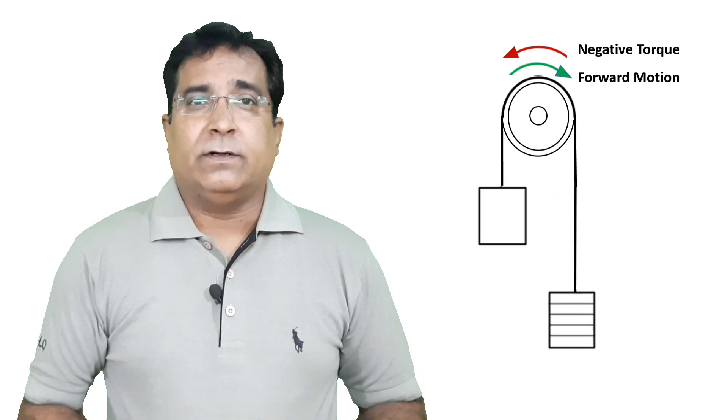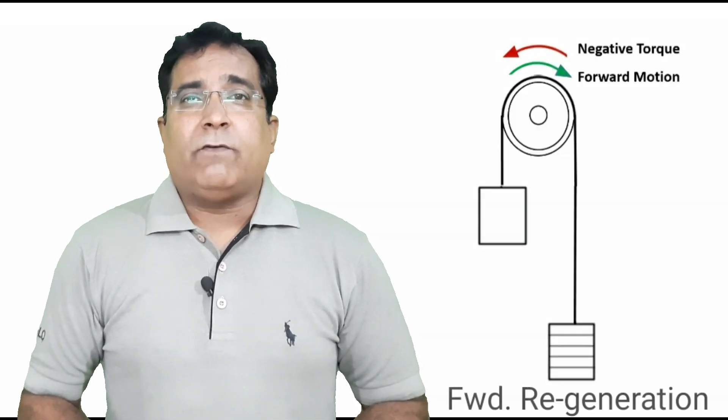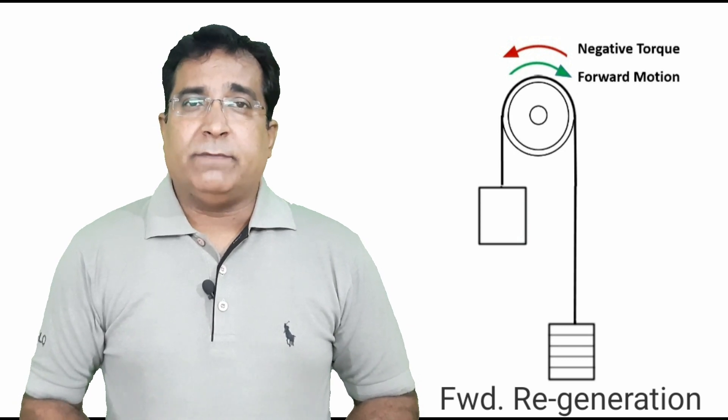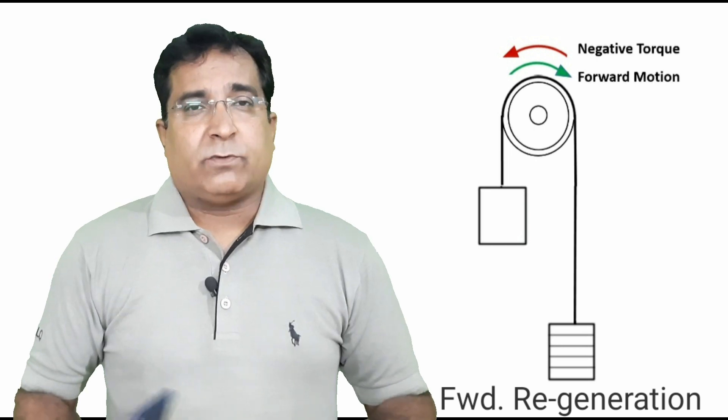Here the empty car is called up from bottom. Again the motor needs to be run in forward direction. But the weight of empty car is less than weight of counterweight. So the gravity will pull the counterweight downward causing the motor to rotate in forward direction with effect of gravity on counterweight. But to limit the speed of empty car under safe limit, motor now will generate a negative torque against gravity and limits the up speed of empty car. This puts the motor into regeneration mode.